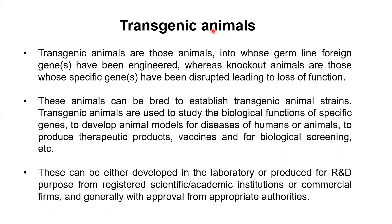Once we have produced a transgenic animal, we can breed it so that it can be propagated. Producing just one animal is not enough — the animal must be bred with other partners so they can give offspring, and those offspring can produce more offspring. This way, the beneficial gene insertion carries on from generation to generation, and the traits we have introduced pass on.